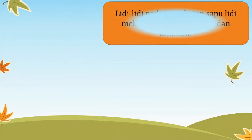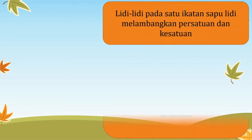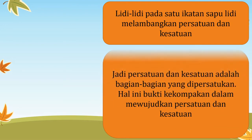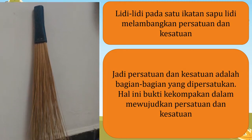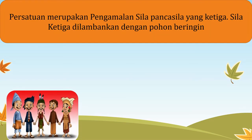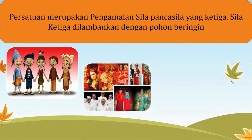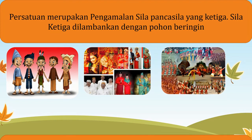Jadi, persatuan dan kesatuan adalah bagian-bagian yang dipersatukan. Hal ini merupakan bukti kekompakan dalam mewujudkan persatuan dan kesatuan bangsa. Persatuan merupakan pengamalan sila Pancasila yang ketiga. Sila ketiga ini dilambangkan dengan pohon beringin. Indonesia memang sangat kaya akan keragaman. Keberagaman harus kita jaga sesuai dengan semboyan kita: Bhinneka Tunggal Ika — walaupun berbeda-beda tetapi tetap satu juga.